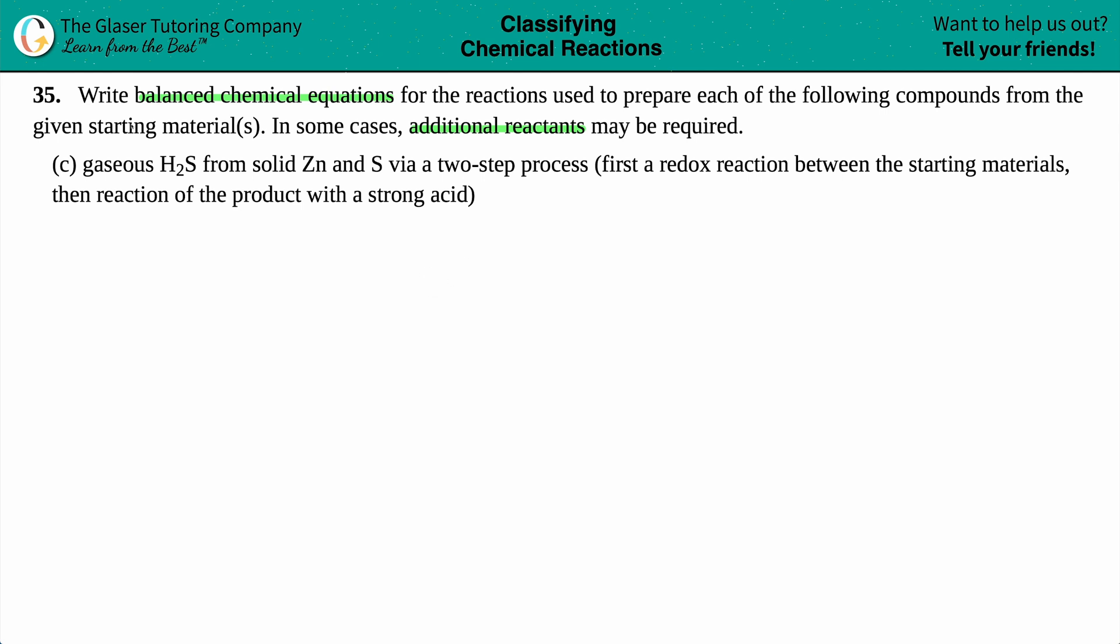Letter C says that we want gaseous H2S from solid Zn and S, so solid zinc and sulfur, via a two-step process. They tell us that the first step is a redox reaction between the starting materials and then a reaction of the product with a strong acid. We know that we're dealing with two steps here, so let's focus on one step at a time. Let's do step number one.